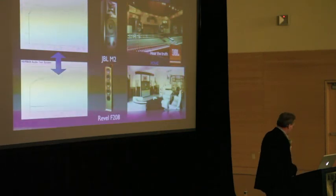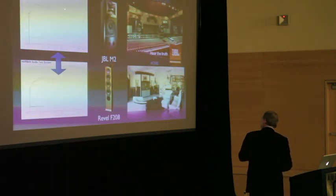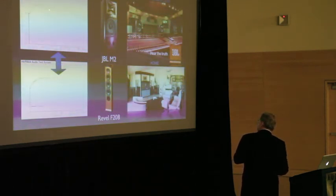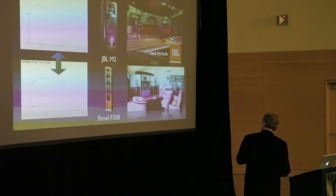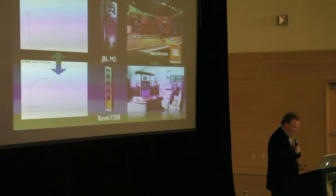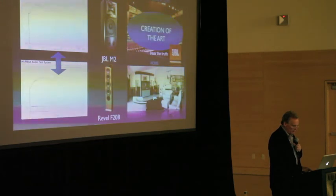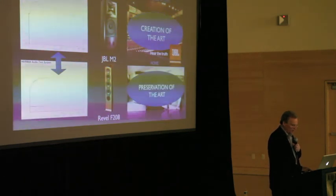So, circle confusion is really under control, I think. These curves are more visible. So, here's an example of a JBL M2 measured anechoically in a Rebel. So, if the music is made through this system and is played back through this system, the consumer is going to hear the art as the artist intended. So, we have the creation of the art and the preservation of the art because we've designed speakers to a similar target.